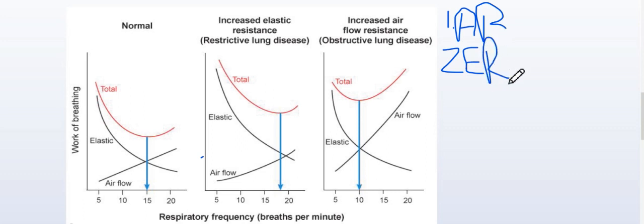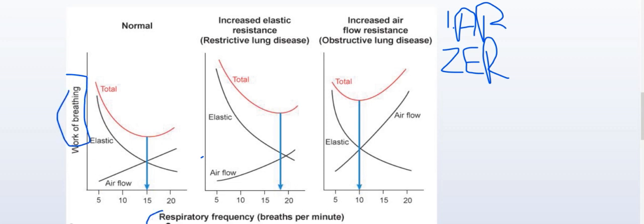As you can see on this graph, there are two axes — the y-axis and the x-axis. The x-axis represents the respiratory frequency, or you can see it as the respiratory rate. As we move along the x-axis, there is an increase in the respiratory rate.